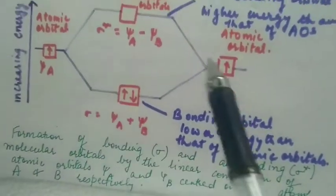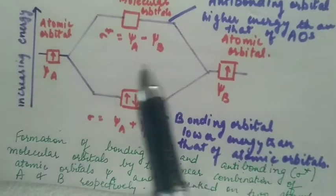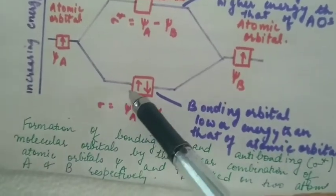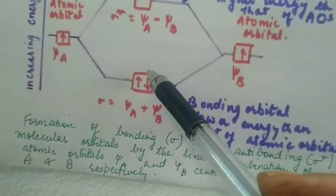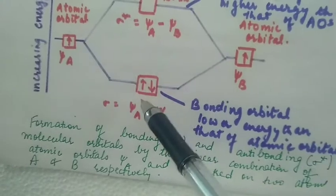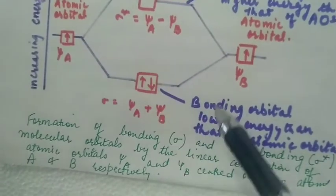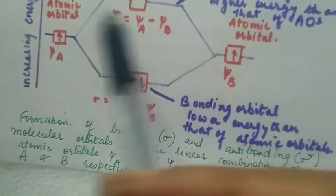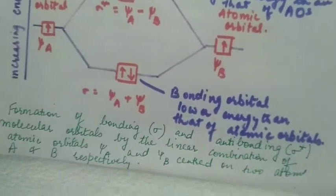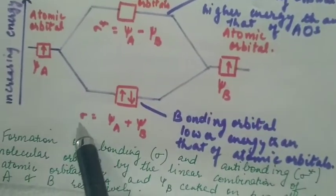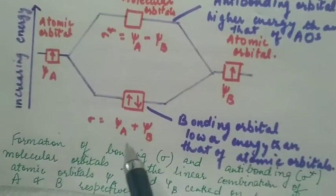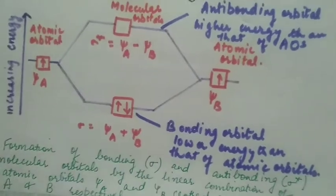When they add up in a constructive manner, the molecular orbital formed is called the bonding molecular orbital. It has lower energy than that of the atomic orbitals. It is represented by sigma, so sigma equals ψA plus ψB.